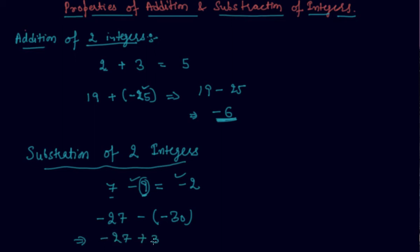Minus 27 minus minus 30 becomes minus 27 plus 30, because negative times negative gives positive. You will get the answer as 3, because 30 minus 27 is 3 and the sign of 30 is positive, so the result will be positive. I hope students you are clear about how to add or subtract two integers.